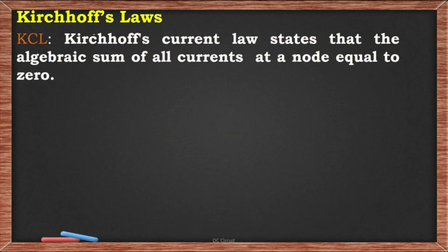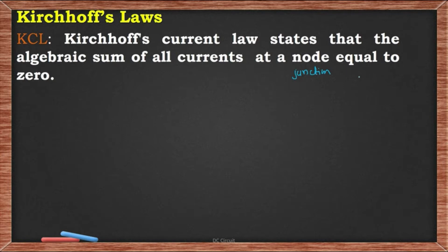Let us begin with KCL — Kirchhoff's Current Law. KCL states that the algebraic sum of currents at a node or junction is equal to zero.